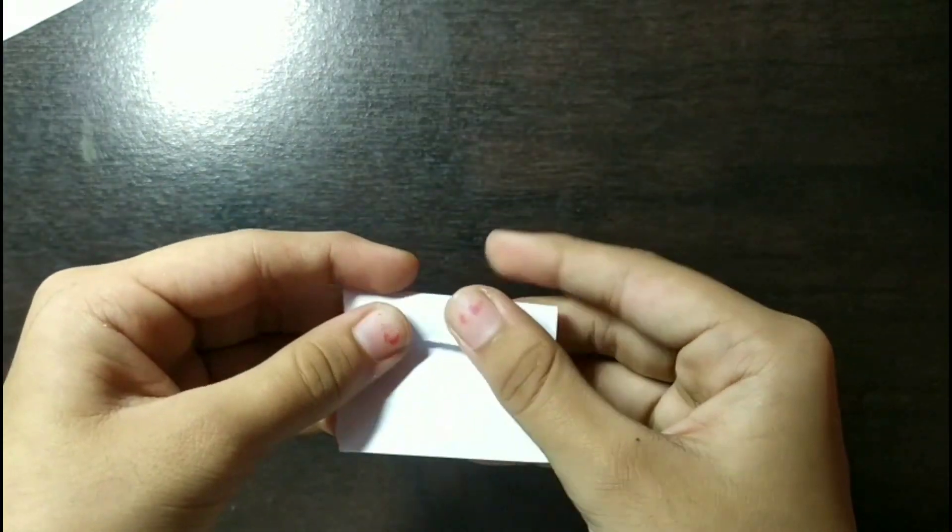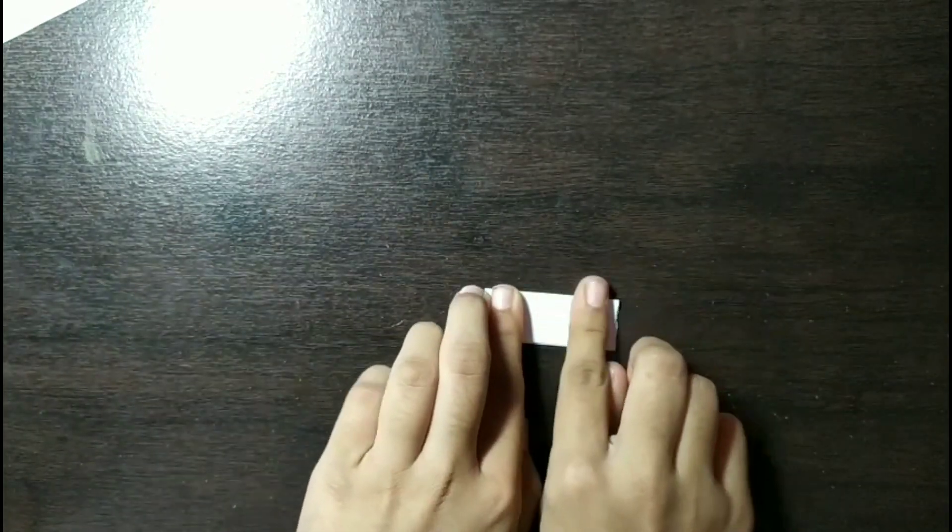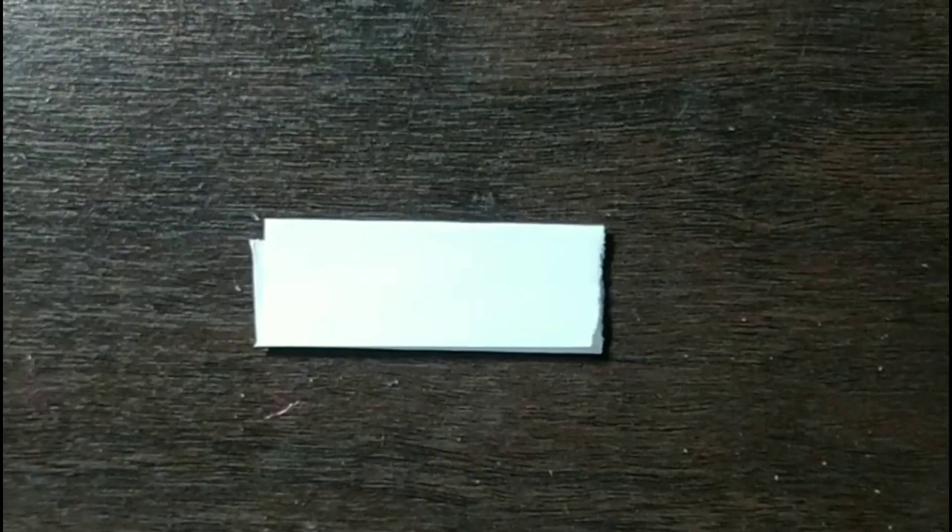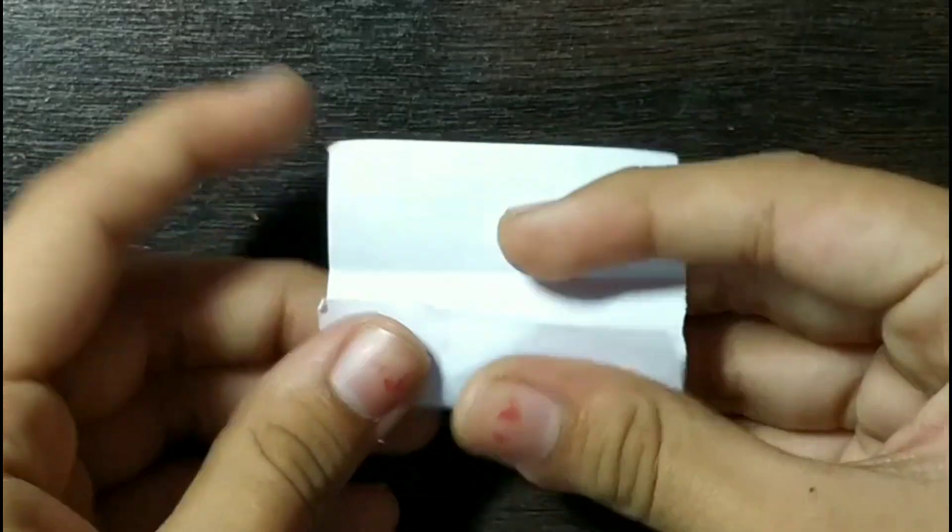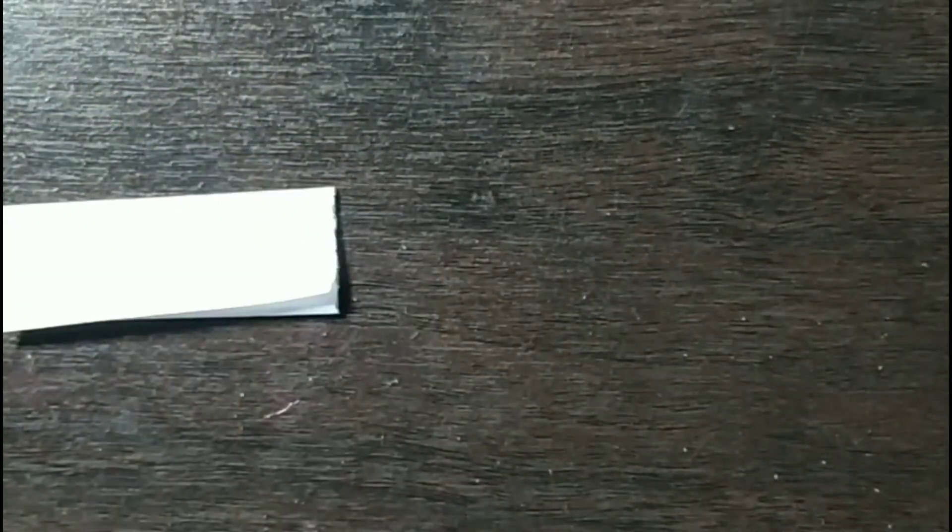And then again fold it and tear it. And now fold it and make a mark of the half and then fold both of them equally so that you can open and close. Just like that. I hope you understand. And I guess you would have understood by now.